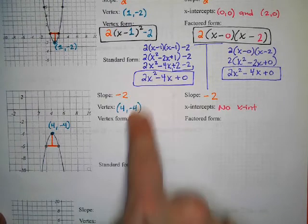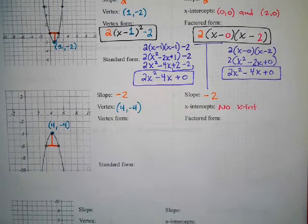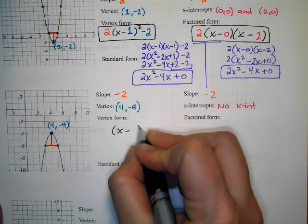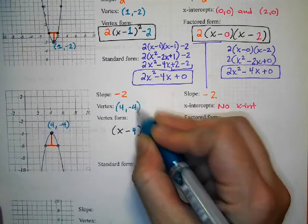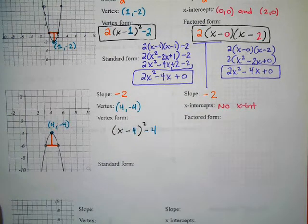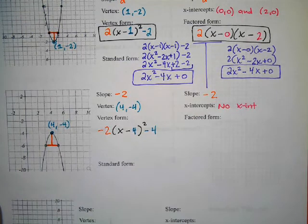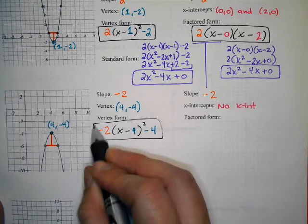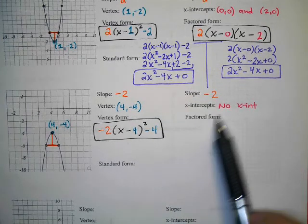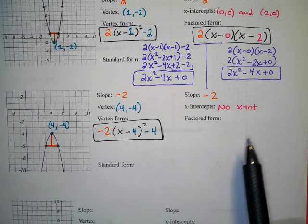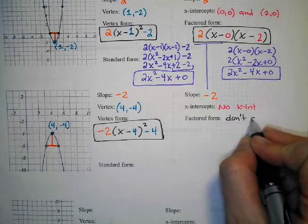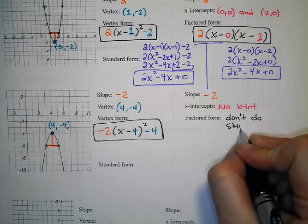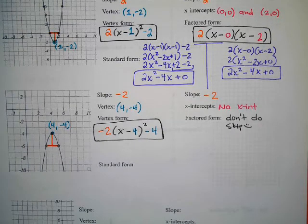Does it have any x-intercepts? So when I build vertex form, I have all of the data. I'm going to build my vertex form. x minus something squared. The vertex x goes here. The y for the vertex is at the end. And I put the slope on the front. Do I have enough data to factor it? No. So I am going to not do factored form. Or you can write skip. We don't have the data to do it.